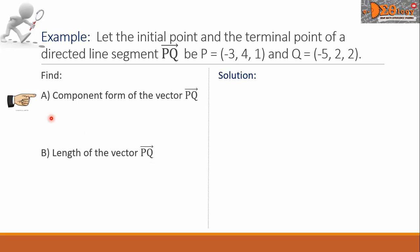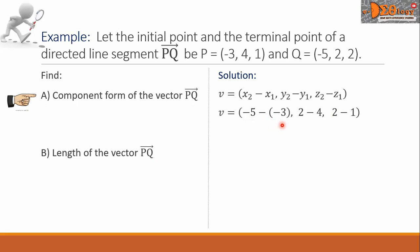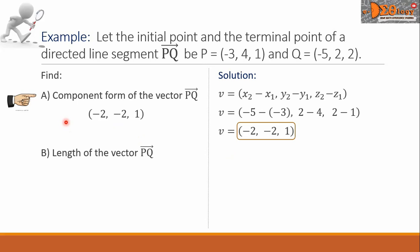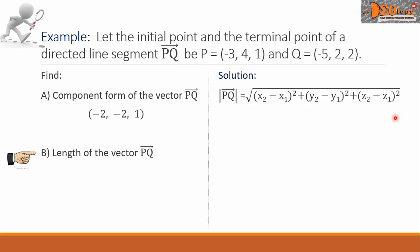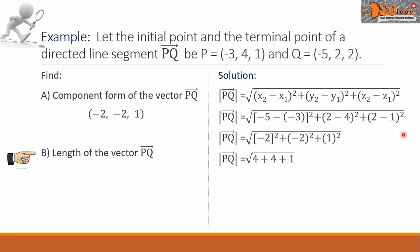Let's begin with problem A. Writing the formula for component form and substituting the corresponding values, we have: (negative 5 minus negative 3, 2 minus 4, 2 minus 1). Simplifying, we get (negative 2, negative 2, positive 1). This is the component form. For problem B, the length of vector PQ, using the formula and substituting the corresponding values and simplifying, the final answer is 3.